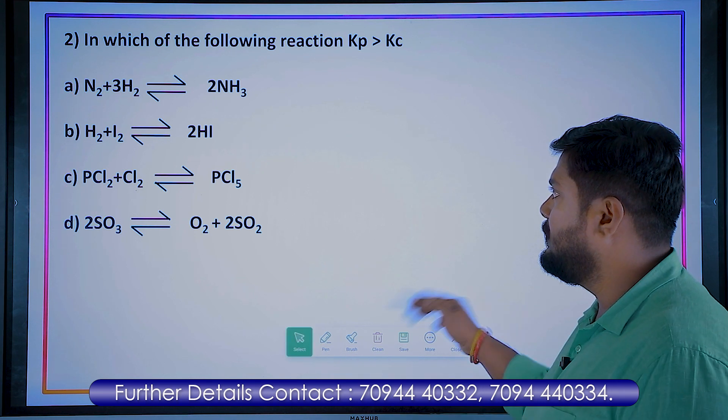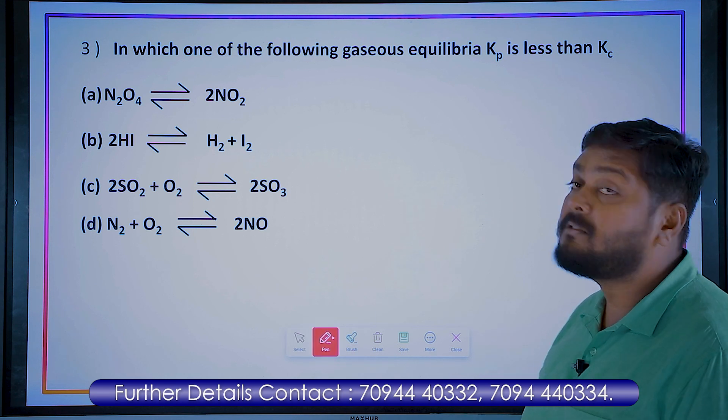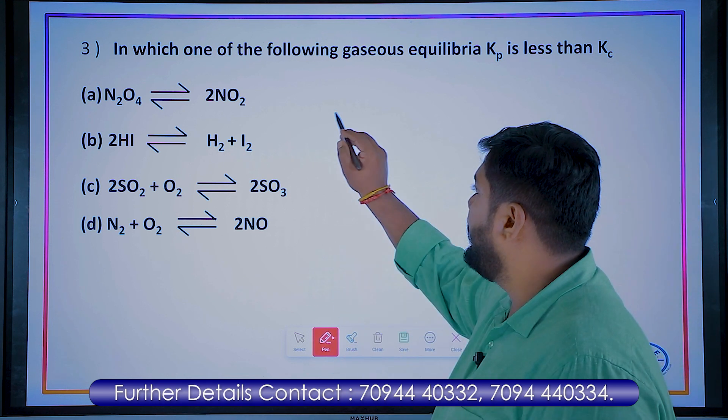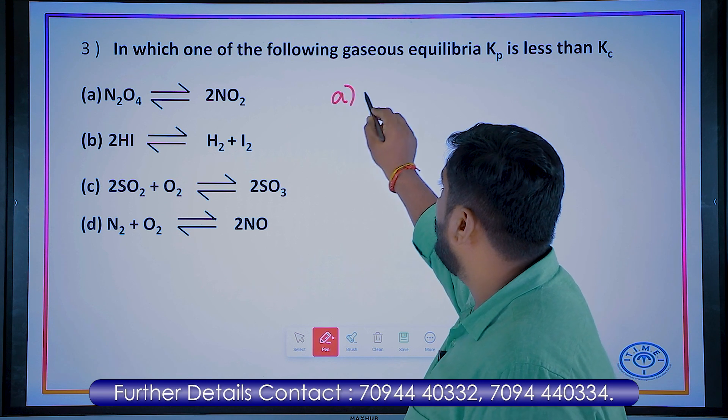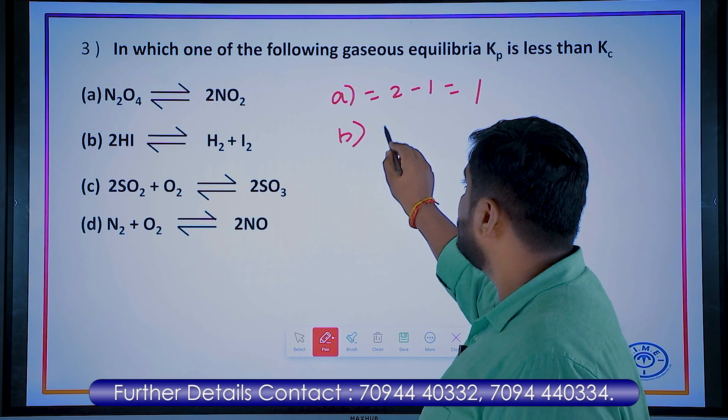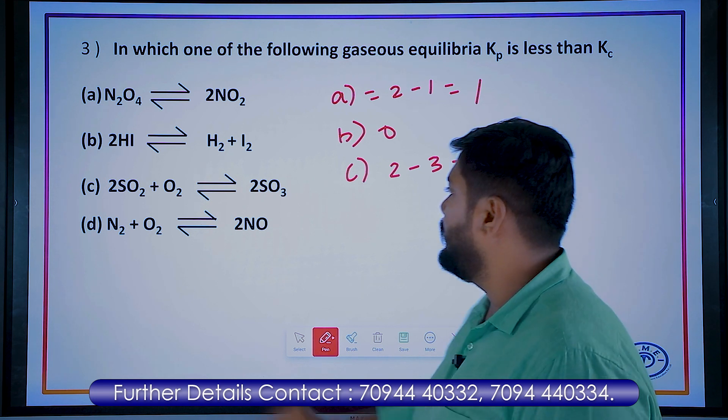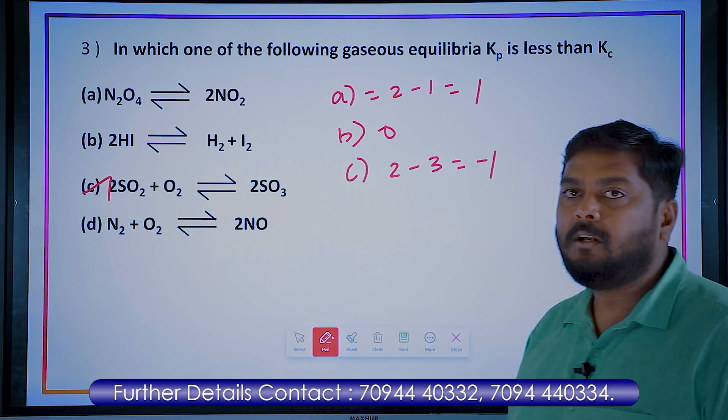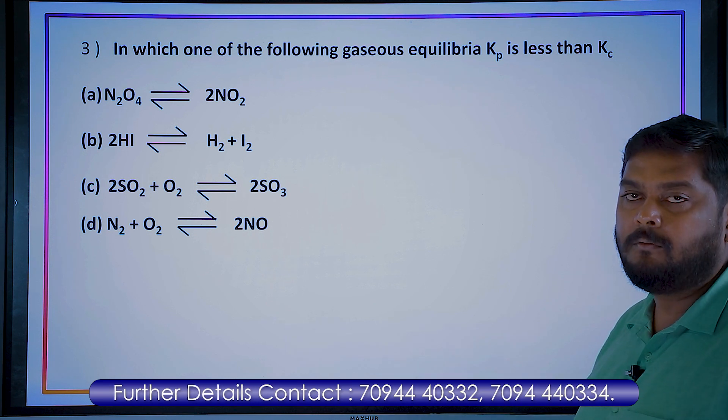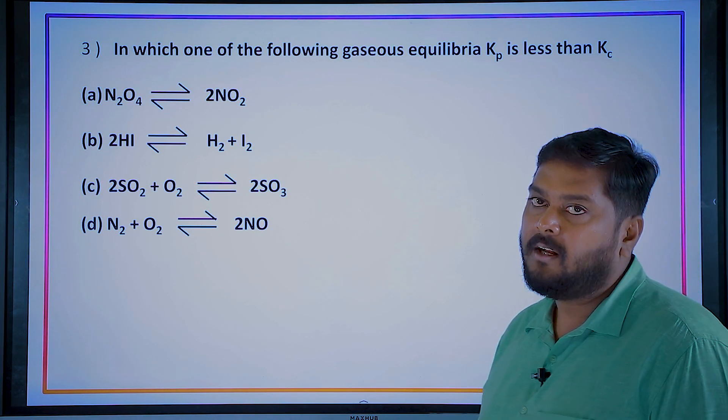And then the third question: which of the following gaseous equilibrium has Kp less than Kc? Delta n must be negative. First option: 2 minus 1, which is plus 1. Option B is zero. Option C: 2 minus 3, which is minus 1. So this will have Kp less than Kc. We have discussed three equations: one has delta n zero, one has delta n positive, one has delta n negative.